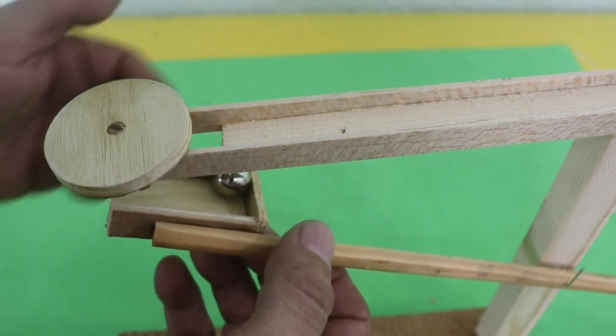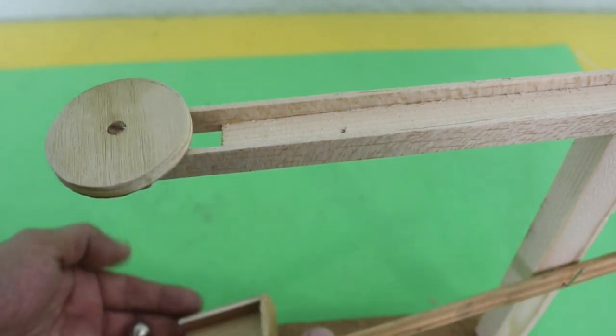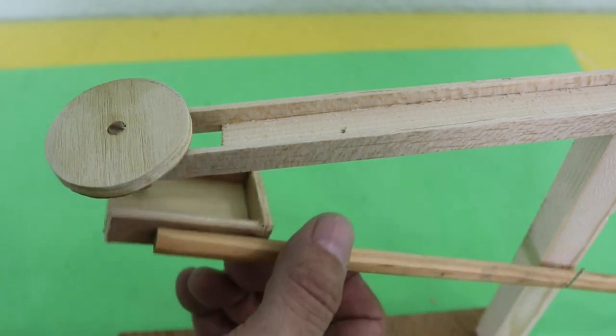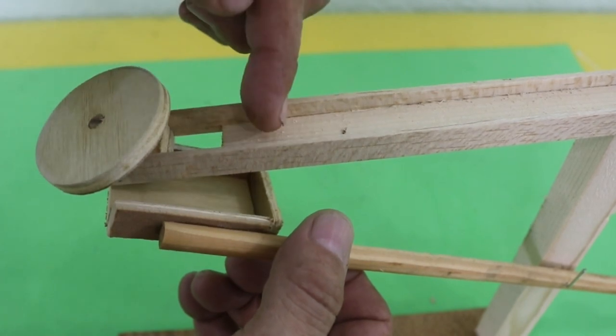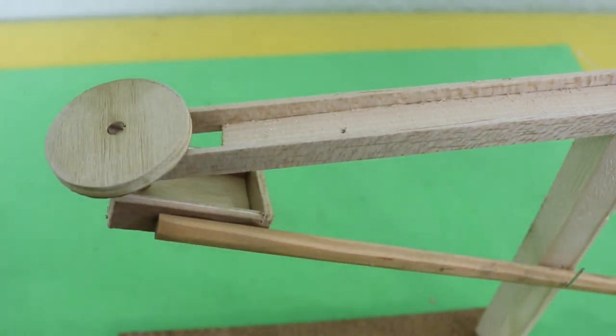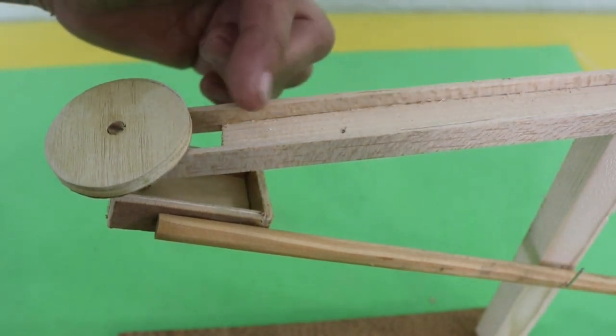The weight of the ball makes this part move down. The ball moves away, and then returns to its position, pushes the circle again, and the next ball can move in. And in that way, the cycle repeats until all of the balls have fallen.